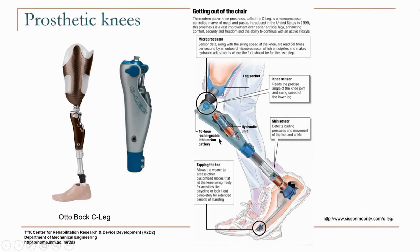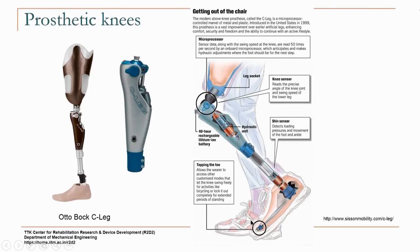The C-leg has a rechargeable battery and the microprocessor reads sensor data at 50 Hz — 50 times per second. If the user wants to do other activities, there is a switch activated by tapping the toe. The knee can be programmed with different programs; for instance, if they want to bicycle they will tap the toe to activate that program.